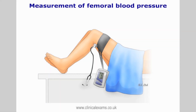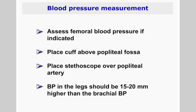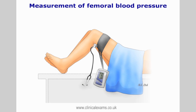Depending on case history and clinical presentation, you may decide to assess the blood pressure of the lower extremities. Place the thigh cuff above the popliteal crease and the stethoscope in the popliteal fossa. In a normal subject, blood pressure in the lower limbs is about 15–20 mmHg higher than in the upper limbs. A blood pressure which is lower in the thigh is abnormal and is suggestive of coarctation of the aorta or other occlusion.